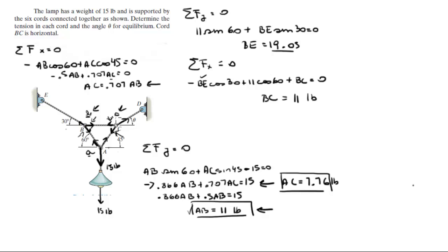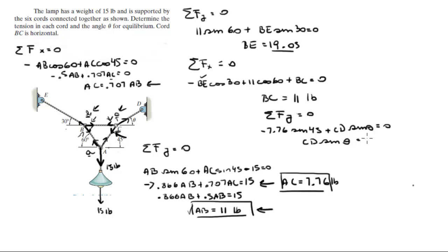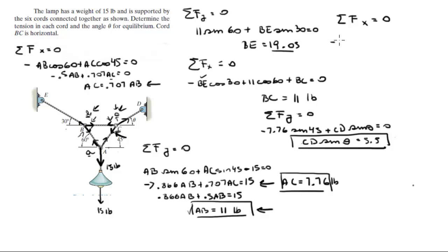Now with AC we go to free body diagram C. The sum of the forces in the Y is equal to 0, so minus 7.76 sine of 45 plus CD sine of theta equals 0, meaning CD sine of theta equals 5.5. The sum of the forces in the X equals 0 gives minus BC minus 7.76 cosine of 45 plus CD cosine of theta equals 0.